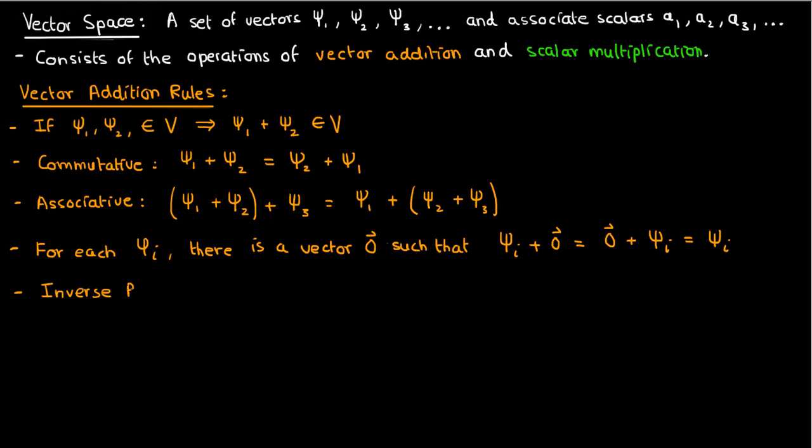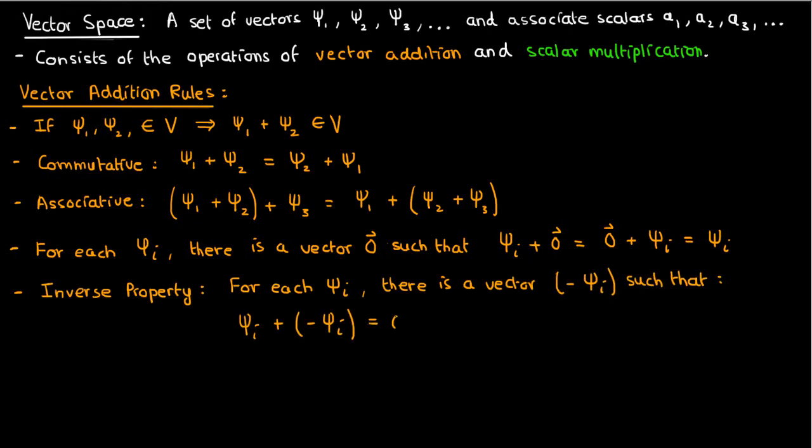Finally for vector addition we have the inverse property, so each vector psi i must have an additive inverse called negative psi i, such that psi i plus negative psi i equals zero.